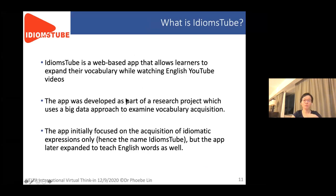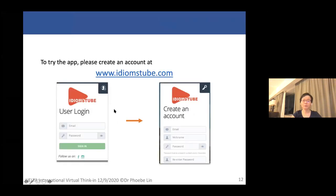So what does Idiomstrip actually do? Idiomstrip is a vocabulary building app, developed as part of a research project that uses a big data approach to examine vocabulary acquisition. The app is called Idiomstrip because initially the project focused on the learning of idiomatic expressions, but as development continued, the app now covers the teaching of English words as well. Users — students and teachers — can create accounts for free by clicking the register for a new account button. We just need their email, a chosen username, and a password.